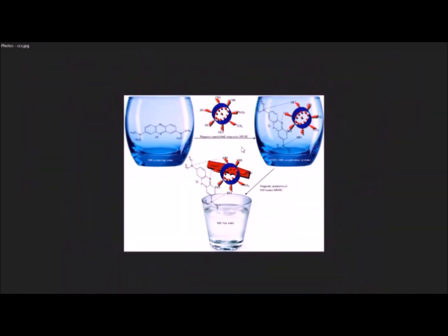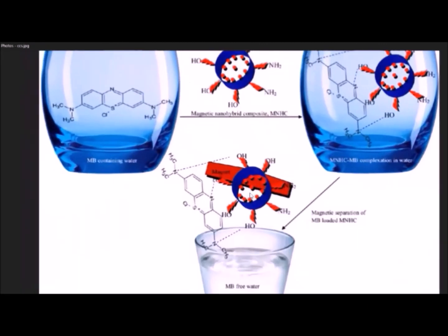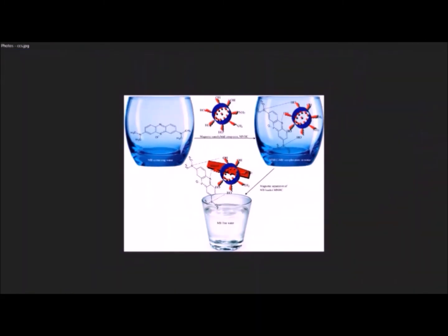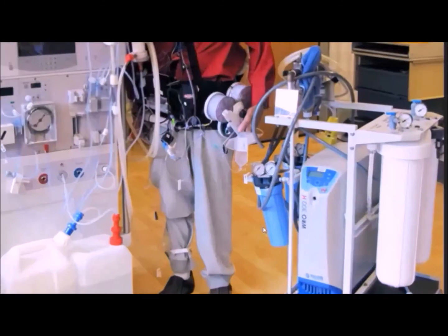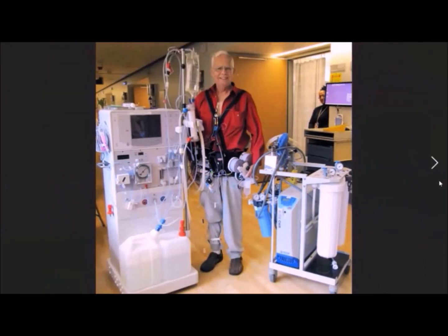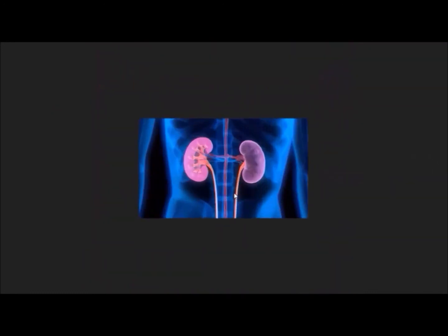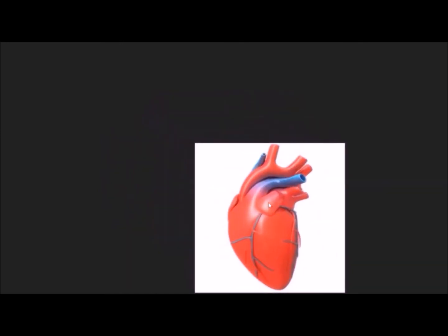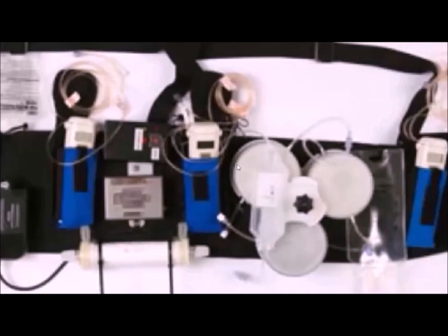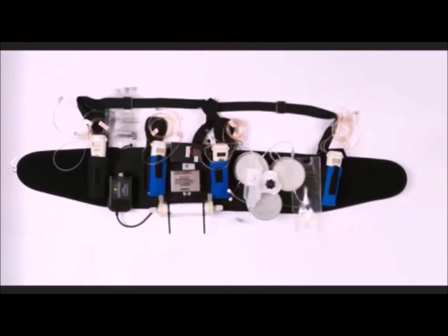Instead of having to be plugged into an electrical outlet, the wearable artificial kidney is battery operated. The device also requires only 370 cc of water, as opposed to 40 gallons. Wearable kidneys can keep patients healthier because they work around the clock, just like real kidneys. This leads to better blood pressure control, less fluid weight gain with less stress on the heart, improved clearance of waste from the blood, and a less strict diet.